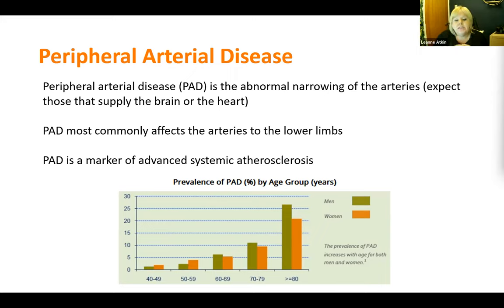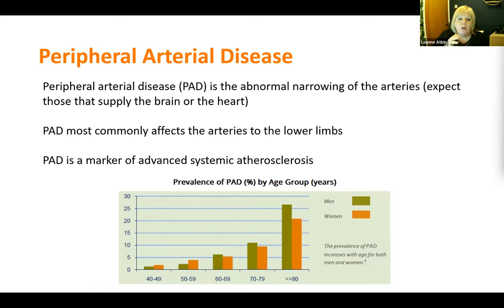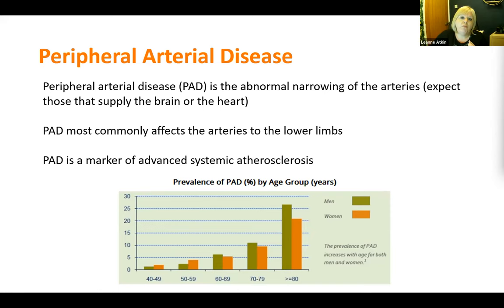Peripheral arterial disease mostly affects those over the age of 60. You can see the prevalence in this graph — it jumps from 60 to 70, and once you get over 80, the prevalence is about 27% in men and about 21% in women. The rates in women are slightly lower than men. We think that's something to do with female sex hormones giving a little bit of protection in terms of disease formation.